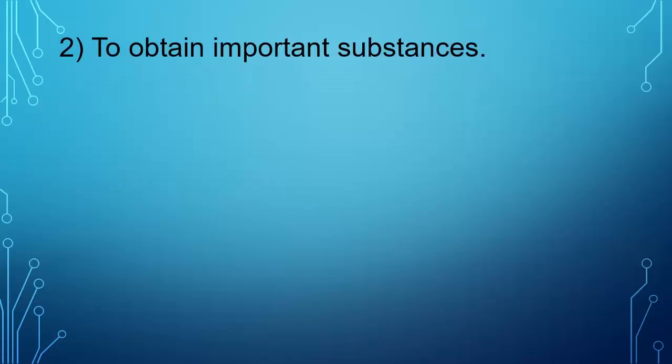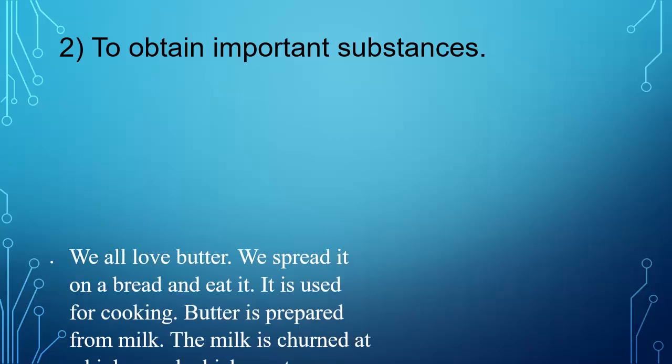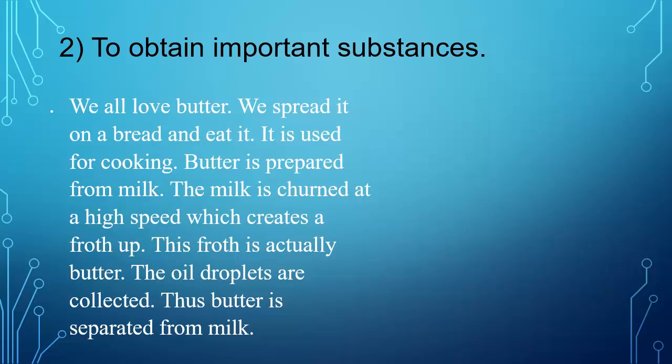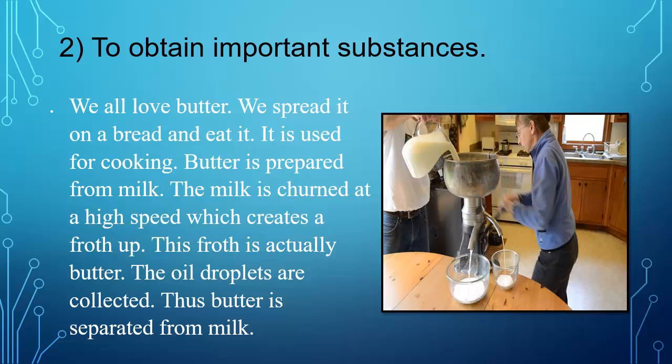Another reason why we need to separate mixtures is to obtain important substances. We all love butter — we spread it on bread and eat it, and it is also used for cooking. Do you know that butter is prepared from milk? The milk is churned at high speed, which creates a froth. This froth is actually butter — the oil droplets are collected and butter is separated from milk.